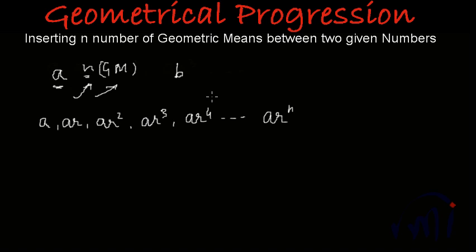And if I include these two numbers also, a was the first term and b is the last term, then this should be a geometrical progression. So what will this b be?